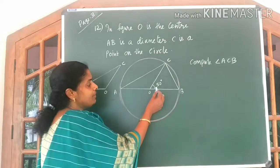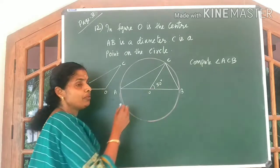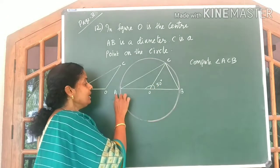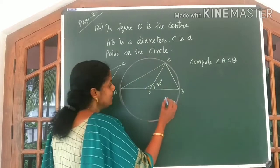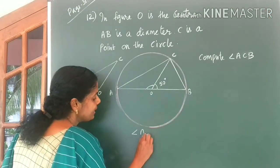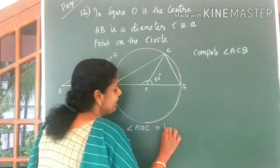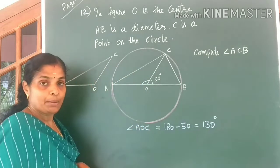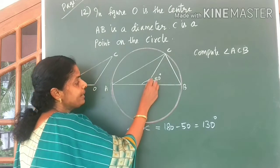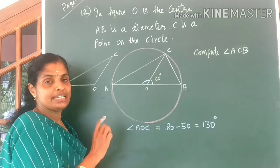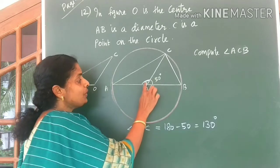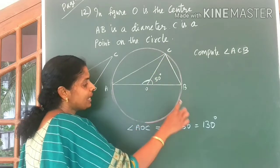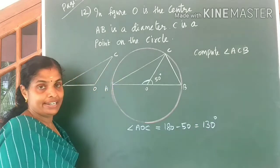First of all, you are given this angle to be equal to 50 degrees. Isn't it? Using 50 degrees, first of all, let us write angle AOC. Angle, look at the board children. Angle AOC is equal to 180 minus 50, which is equal to 130 degrees. Because the two angles here, sum of all angles in a linear pair is 180 degrees. So to get this angle AOC, I have subtracted 50 degrees from 180 degrees. So I got 130 degrees. Clear?